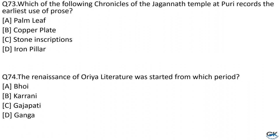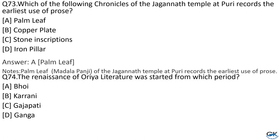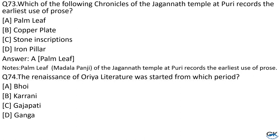Question No. 73: Which of the following chronicles of the Jagannath temple at Puri records the earliest use of prose? Option A: Palm leaf. Option B: Copper plate. Option C: Stone inscriptions. Option D: Iron pillar. The answer is Option A, Palm leaf — i.e., Madala Panji of the Jagannath temple at Puri records the earliest use of prose.